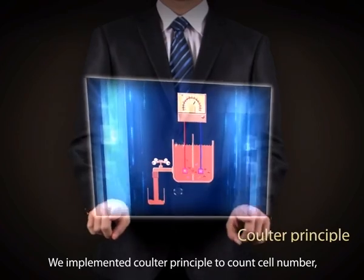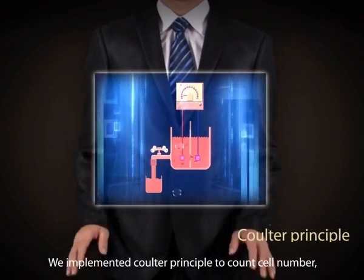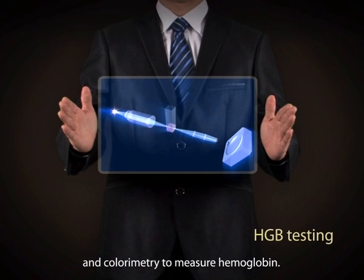We implemented the Coulter Principle to count cell number and colorimetry to measure hemoglobin.